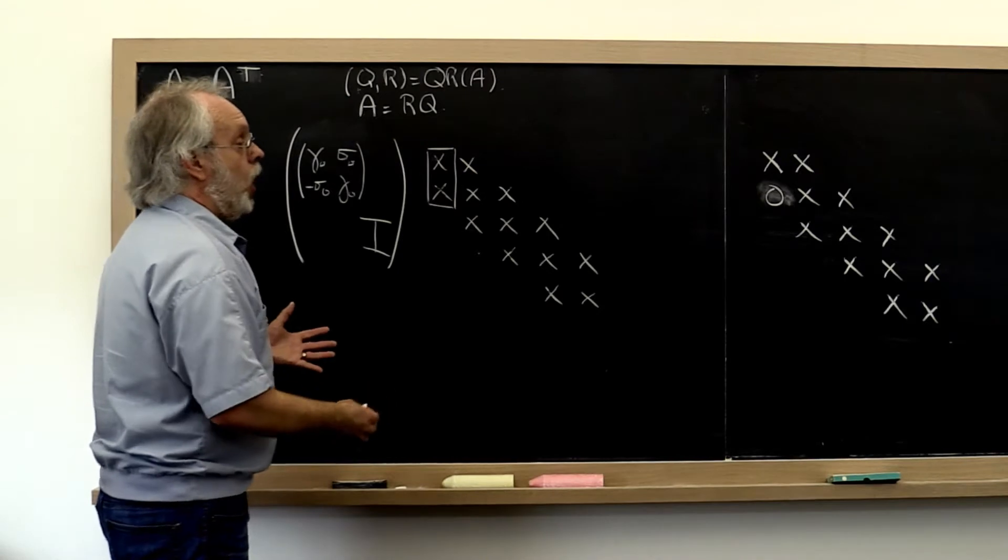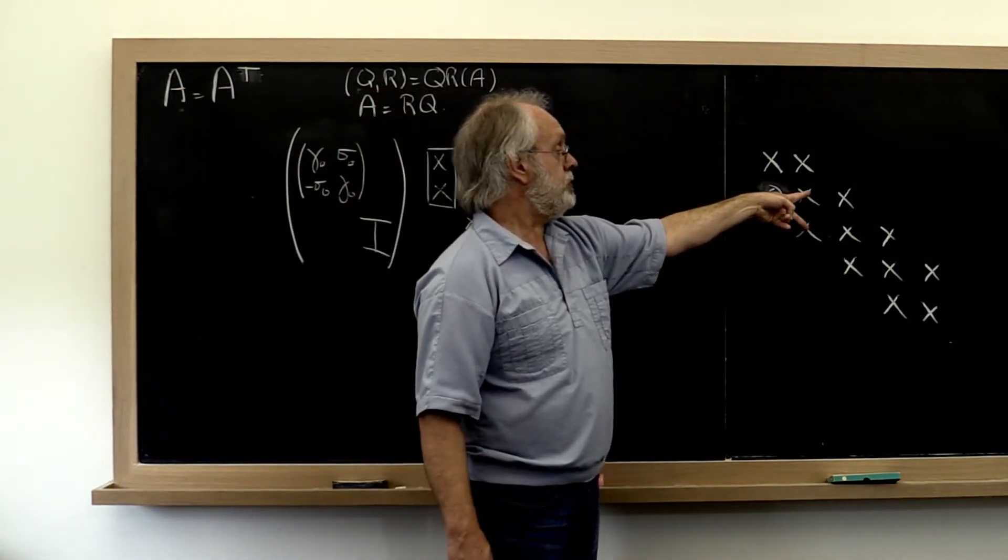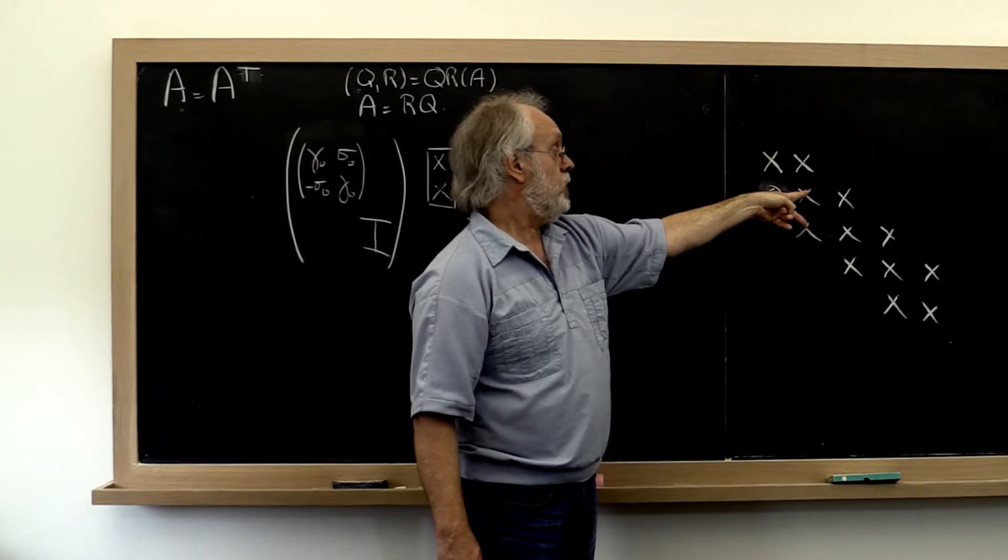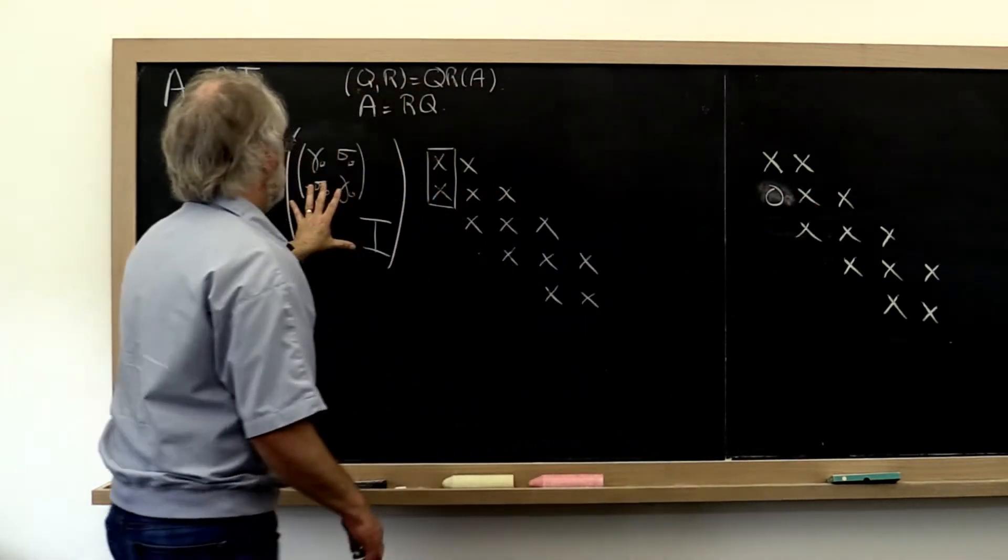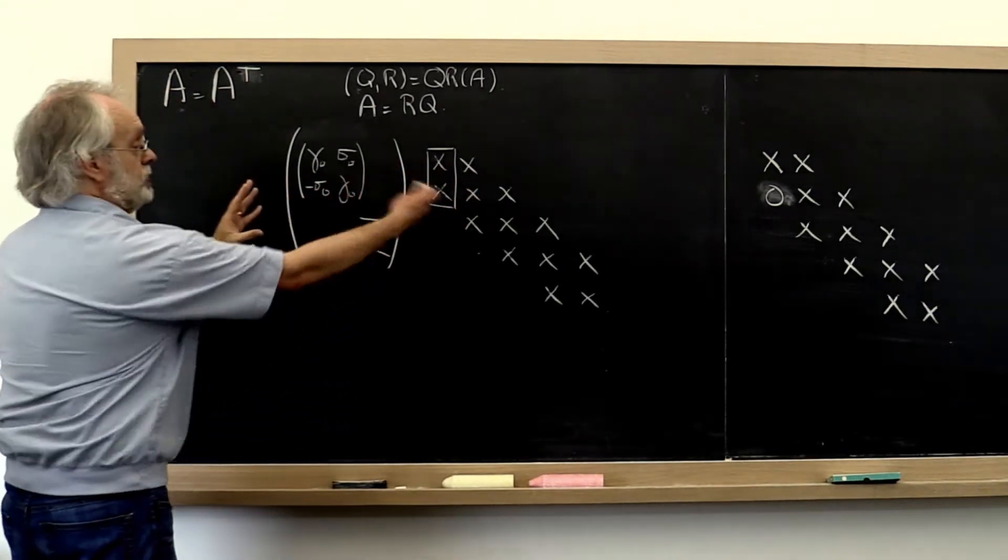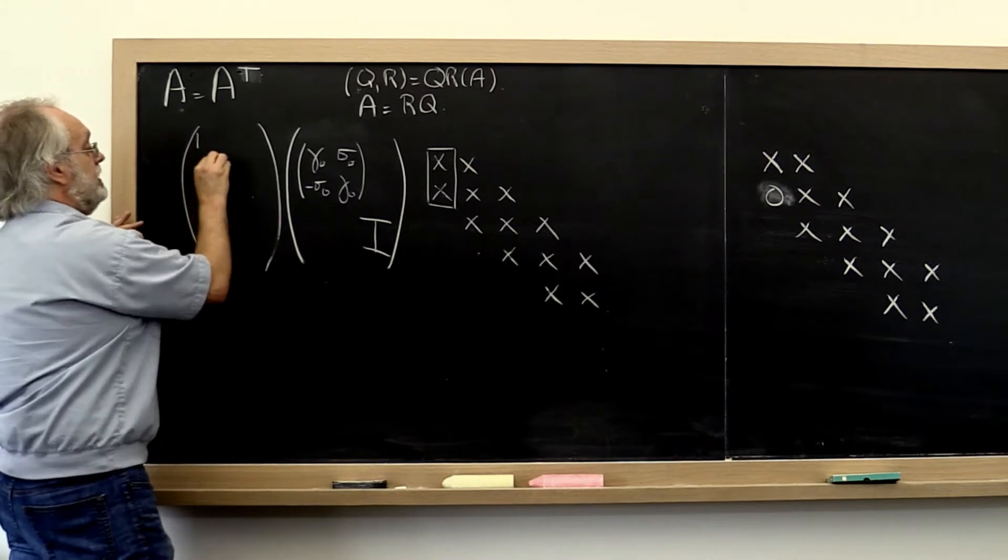And then we can say, now we can compute a Givens rotation off of these two entries, which if we applied it from the left to this result matrix, that's the same as also applying it to this transformed matrix here. So this would give us a new Givens rotation that would look like this.